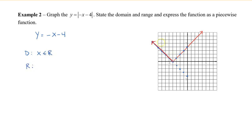And the range, the smallest y value, is y equal to 0. And then the rest of the graph points upward. So we can say that y is greater than or equal to 0.